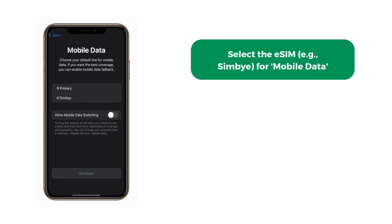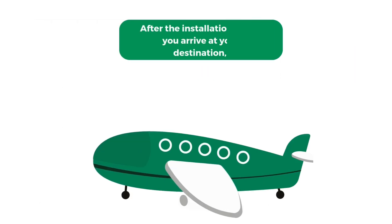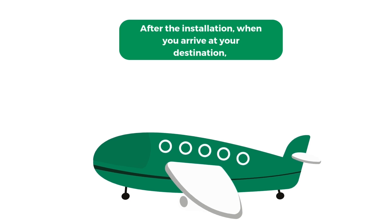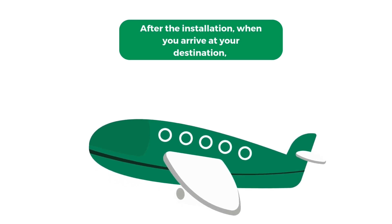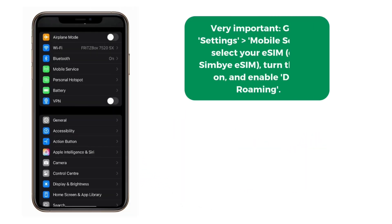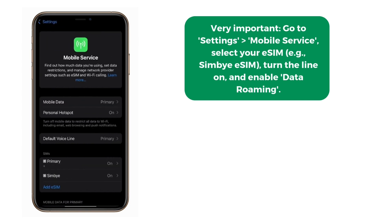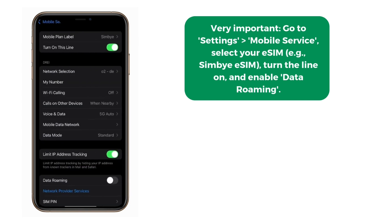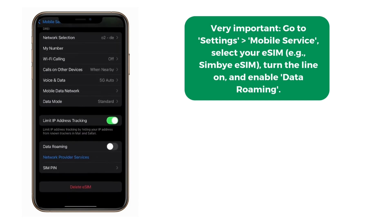Select the eSIM for Mobile Data. After the installation, when you arrive at your destination — very important — go to Settings > Mobile Service. Select your eSIM, turn the line on, and enable Data Roaming.